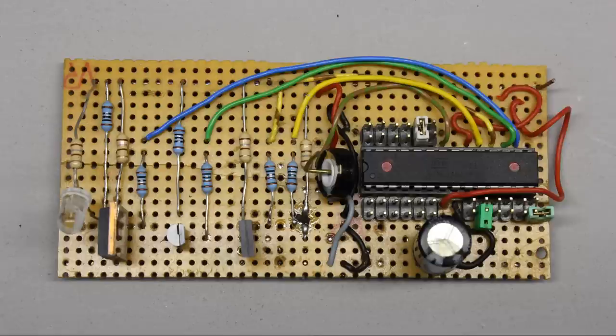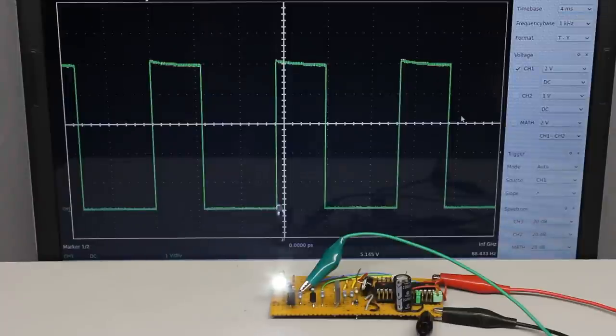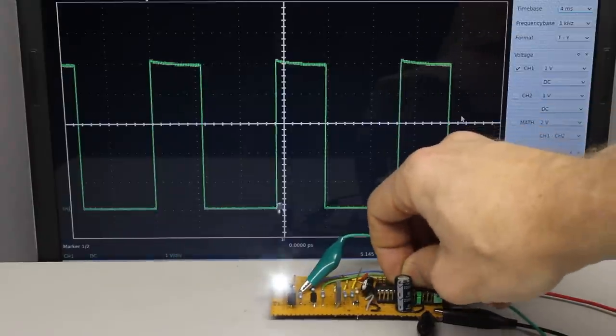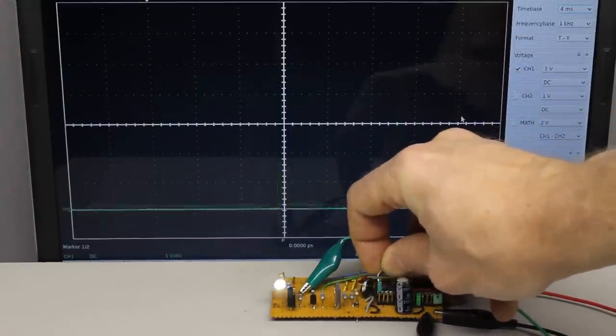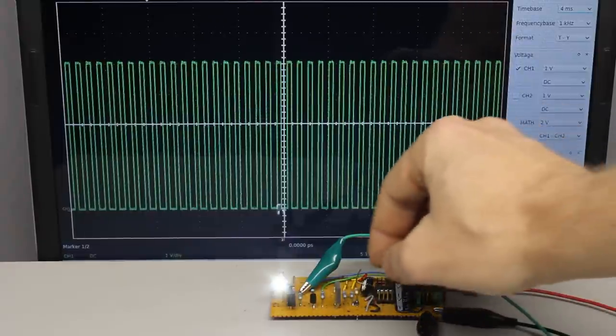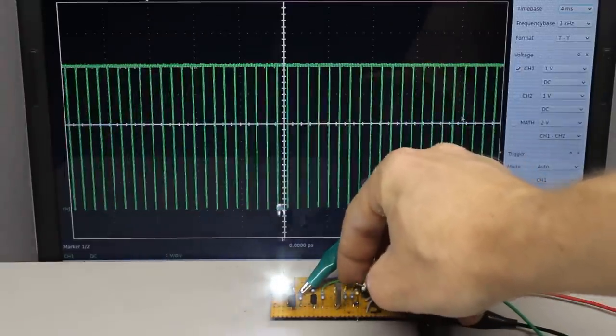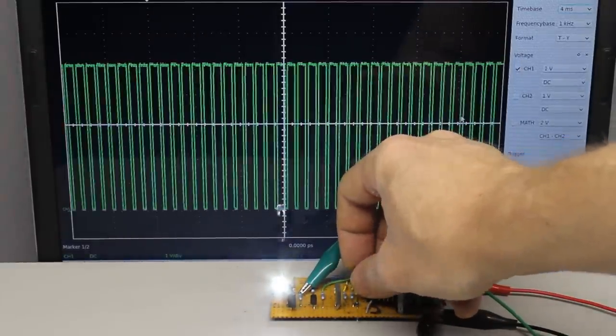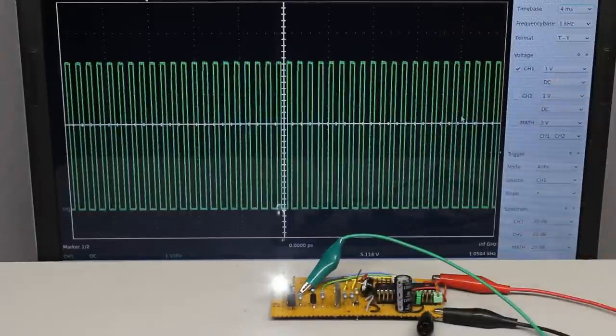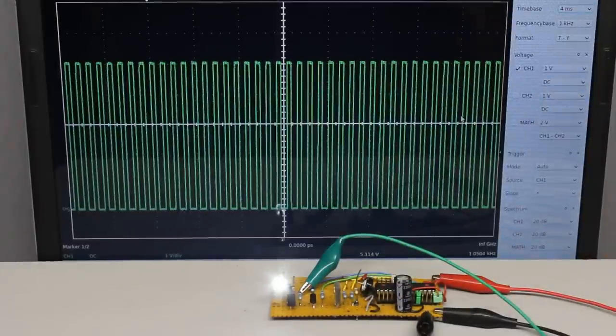Here an ATmega 8A operates as the signal source of the circuit. The position of the potentiometer is read by an analog to digital converter and the pulse width signal is calculated by the microcontroller which is clocked at a frequency of 4 MHz. The switching frequency can be read precisely by software or by jumpers, from a few Hz up to some 100,000 Hz.